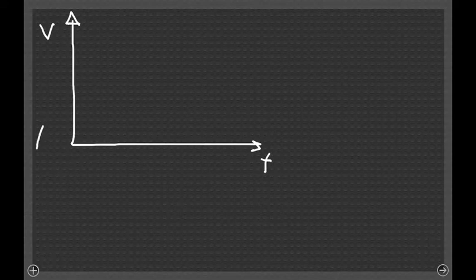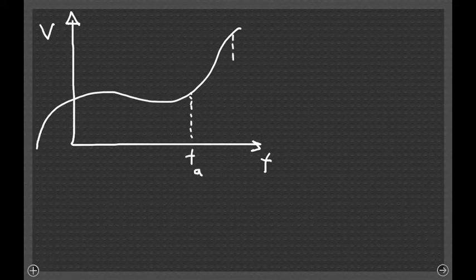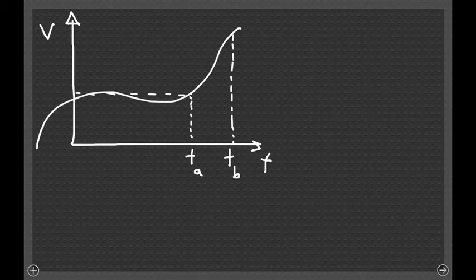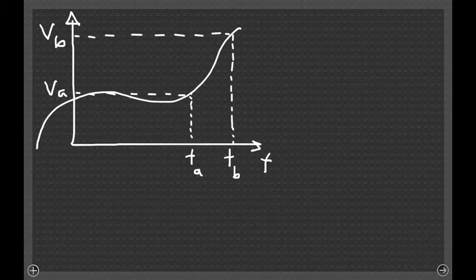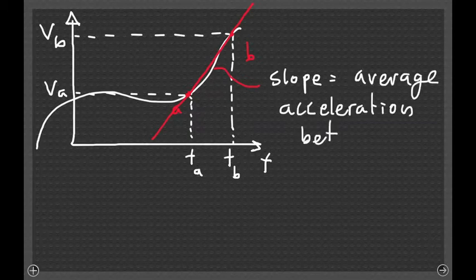So if the velocity as a function of time is some curve like this, one can talk about the average acceleration between two points, t_a and t_b, with the velocity at time t_a being v_a and the velocity at time t_b being v_b. The average acceleration between those two points is therefore the slope of the straight line that goes from a to b.